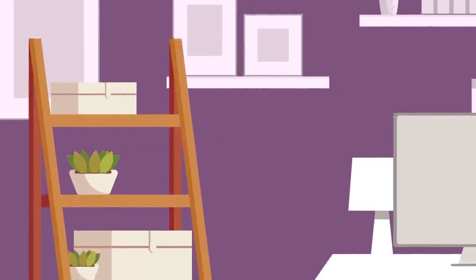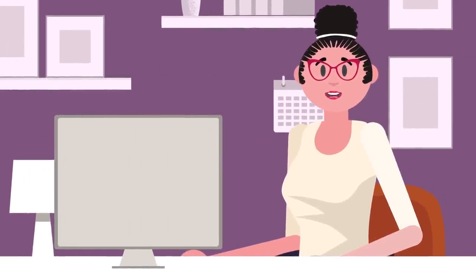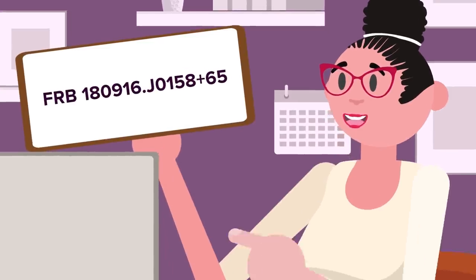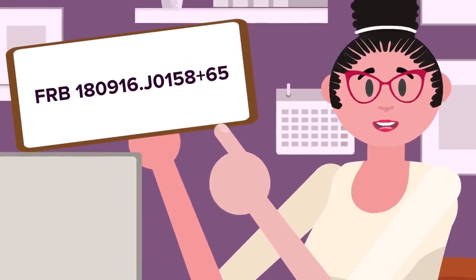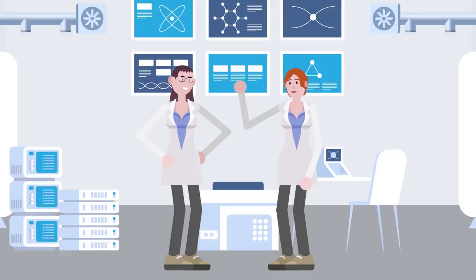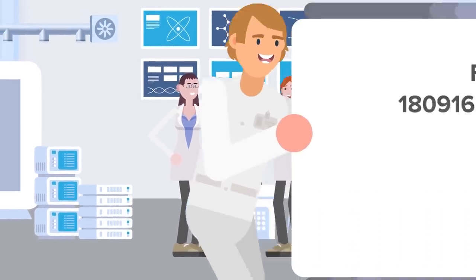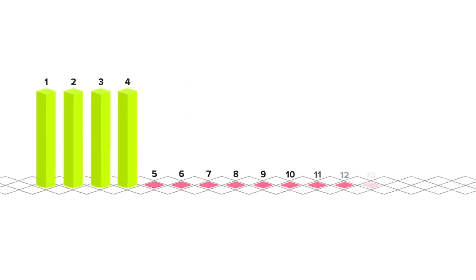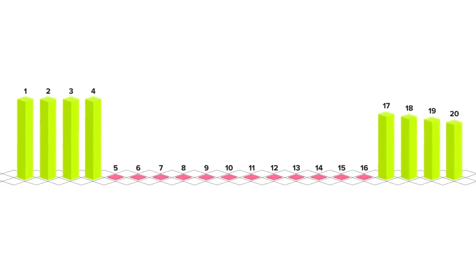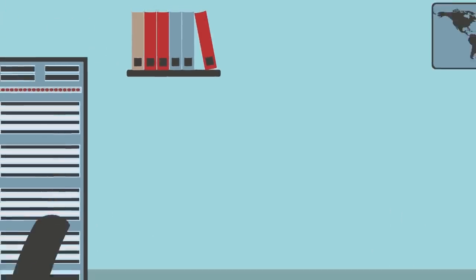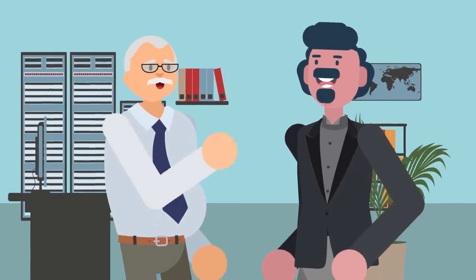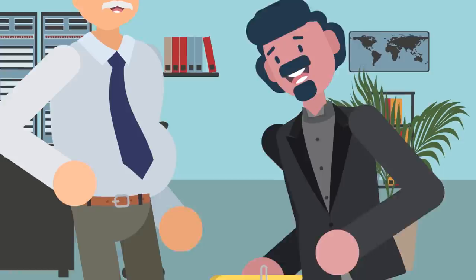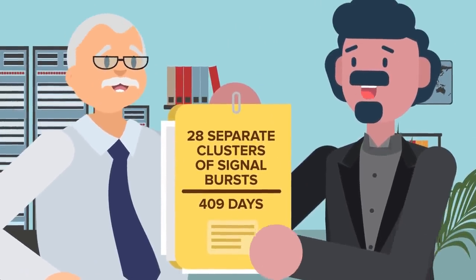Excitingly, the signals for FRB 180916.J0158-65 have remained fairly consistent. After a year of observation, researchers were able to confirm that the FRB has a distinct pattern, where over the course of four days the signal would release a burst or two each hour, then it would go silent for another 12 days and repeat. Twenty-eight separate clusters of signal bursts were recorded from September 16, 2018 through October 30, 2019 for a total of 409 days.